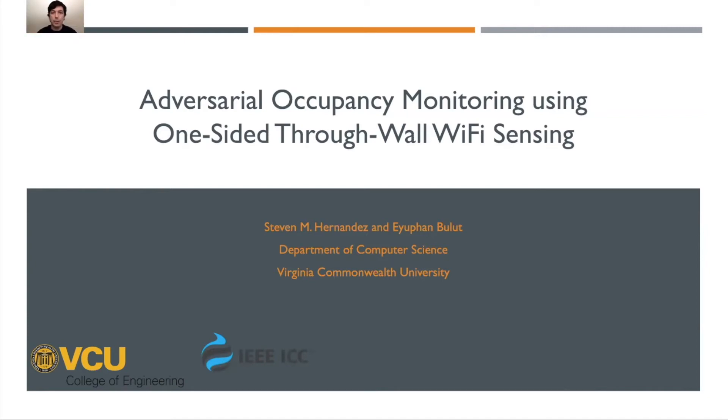Hello, everyone. My name is Steven. I'm a PhD student in the Department of Computer Science at Virginia Commonwealth University. Today, we're looking at our work on adversarial occupancy monitoring using one-sided through-wall Wi-Fi sensing.